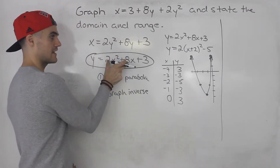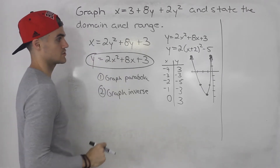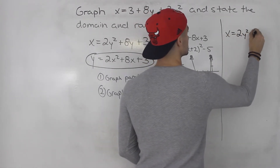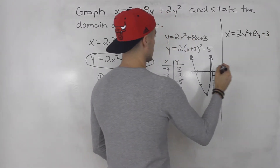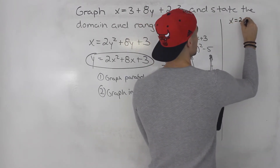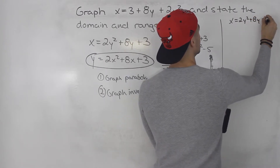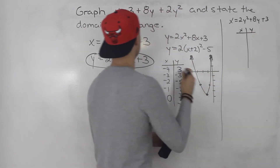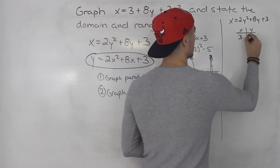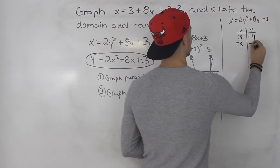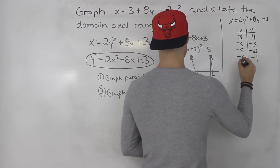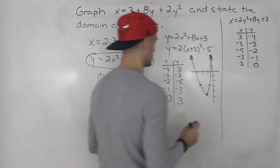Now for x equals 2y squared plus 8y plus 3. Since this is the inverse of the parabola we just graphed, its table of values is just the previous table with x and y values interchanged. So the table gives us: x = 3, y = negative 4; x = negative 3, y = negative 3; x = negative 5, y = negative 2; x = negative 3, y = negative 1; and x = 3, y = 0.